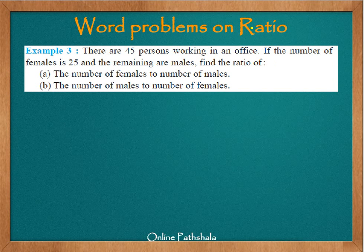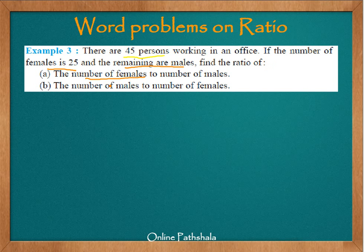Let us continue our discussion on word problems on ratio. The third example says: there are 45 persons working in an office. If the number of females is 25 and the remaining are males, find the ratio of: A) the number of females to the number of males, and B) the number of males to the number of females.